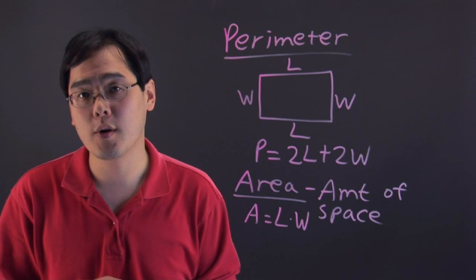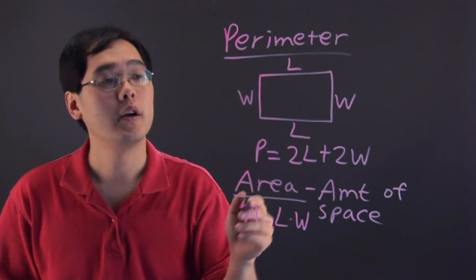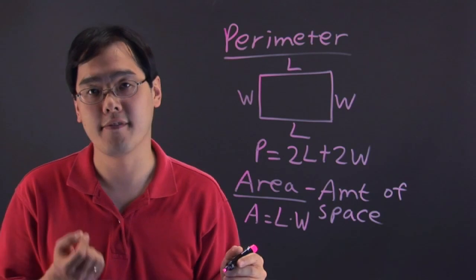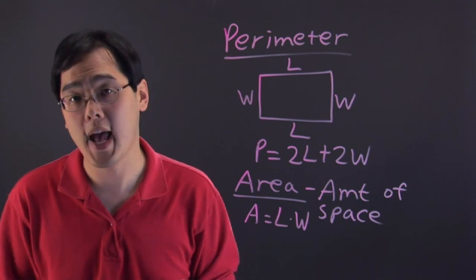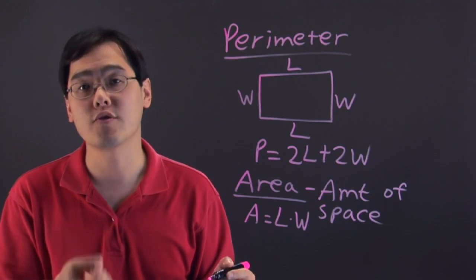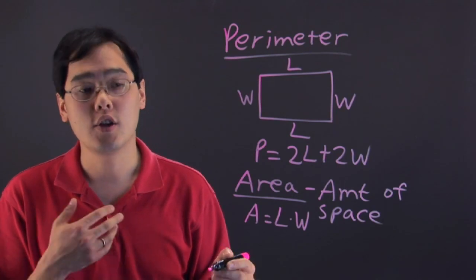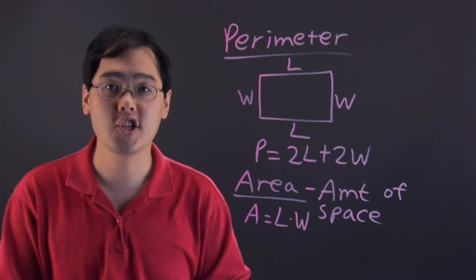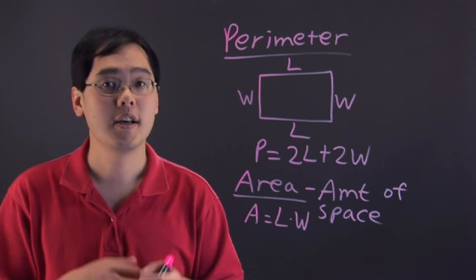And the other thing I want to talk about is with perimeter, your final units tend to be linear units like feet, inches, meters, what have you. Whereas in area, because you're talking about the amount of space, you're measuring two dimensions at a time. Your answer in units when it comes to area would be in square units like square inches, square feet, things like that.